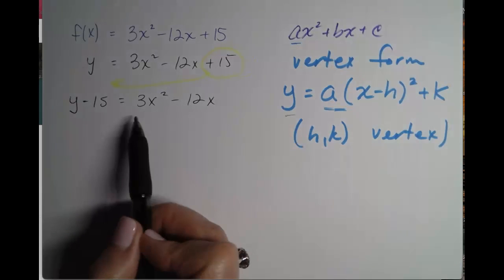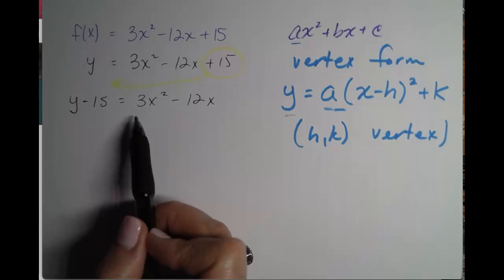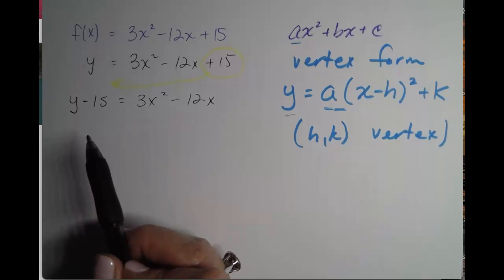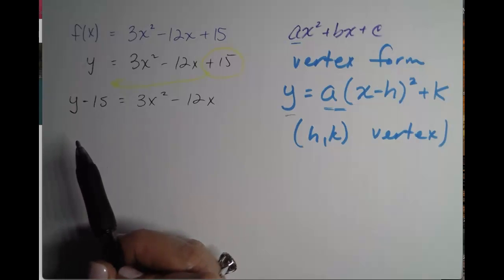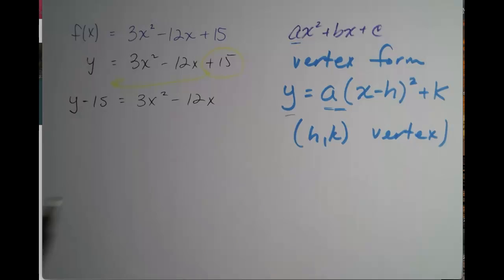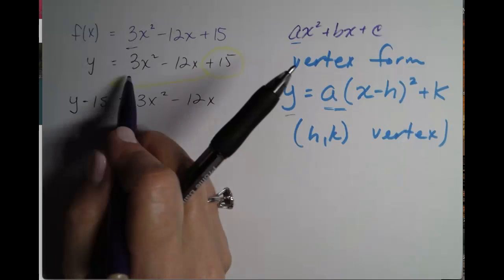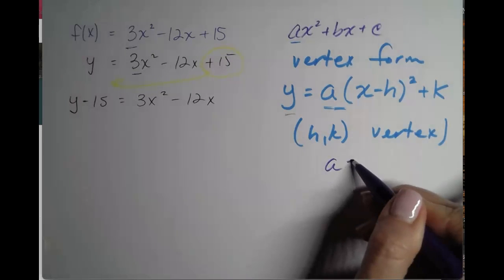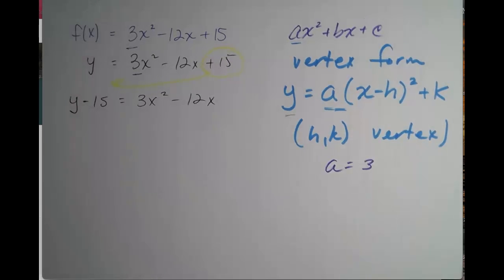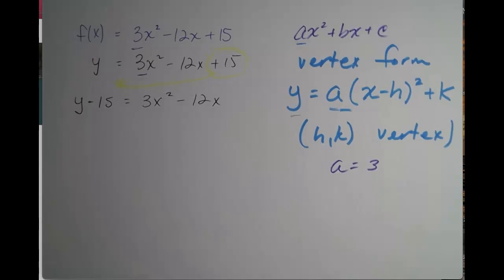Next thing we're going to do is we need to complete the square. And in order to do that, we are going to factor out a. Remember, a is 3. So if a is 3, that's the only part that's going to come out. Not the entire greatest common factor, but just a.